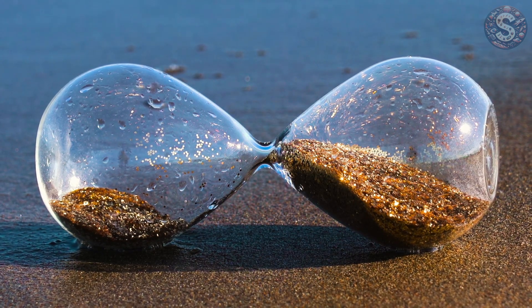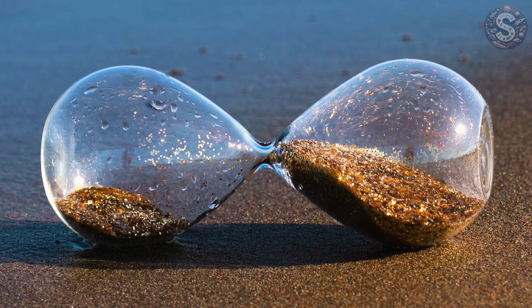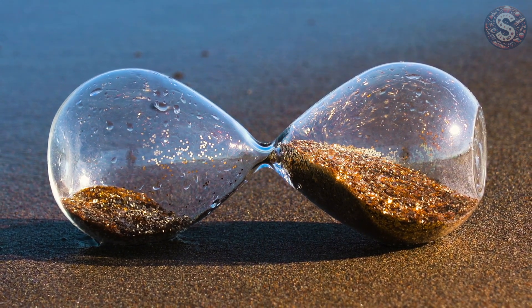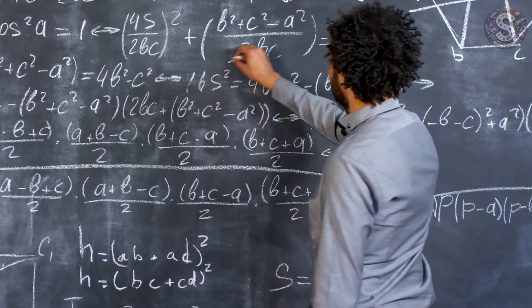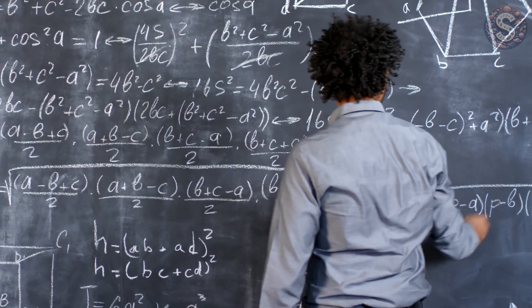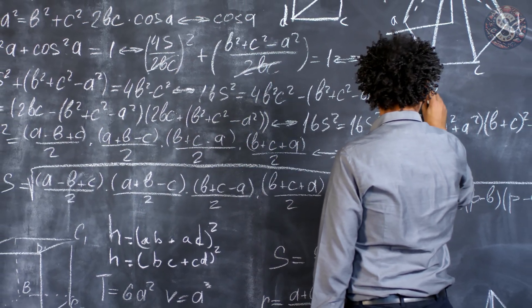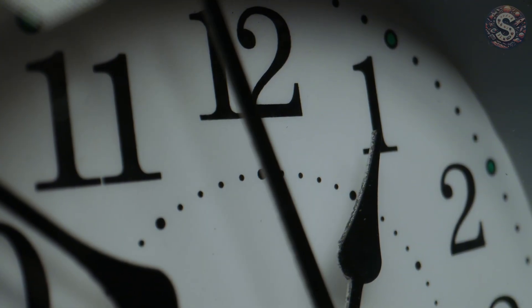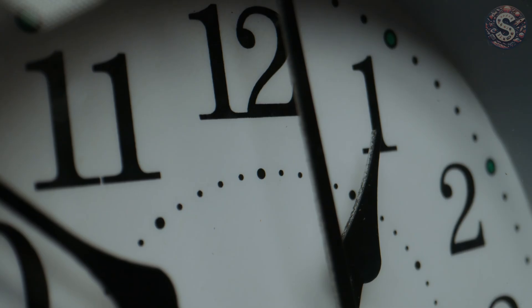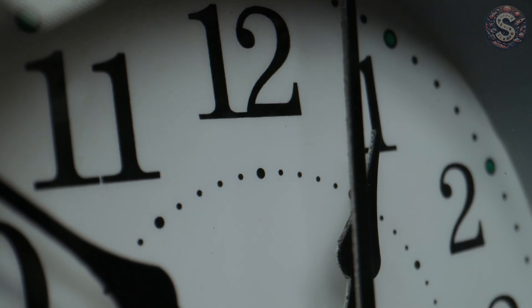Before we can ask whether time might end, we need to ask a simpler question: What is time in the first place? And that turns out to be one of the hardest questions in all of physics. To most of us, time feels obvious. It's the steady ticking of a clock, the rhythm of day and night, the aging of our bodies. It flows forward like a river, carrying us from the past into the future. But here's the problem. That comforting picture of time isn't really how physics describes it.